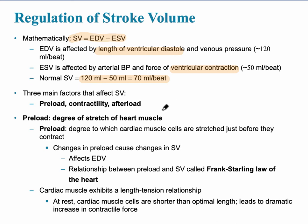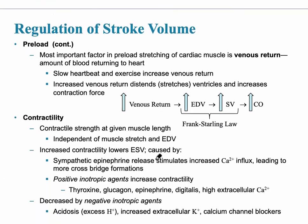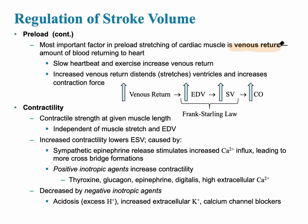The three main factors affecting stroke volume — sometimes referred to as the Frank-Starling Law of the heart — are preload, contractility, and afterload. Preload is the degree of stretch of the cardiac muscle beforehand, which is why aerobic exercise is beneficial. Preload is also referred to as venous return: a slow heartbeat and exercise can increase venous return, increasing the blood filling the heart.